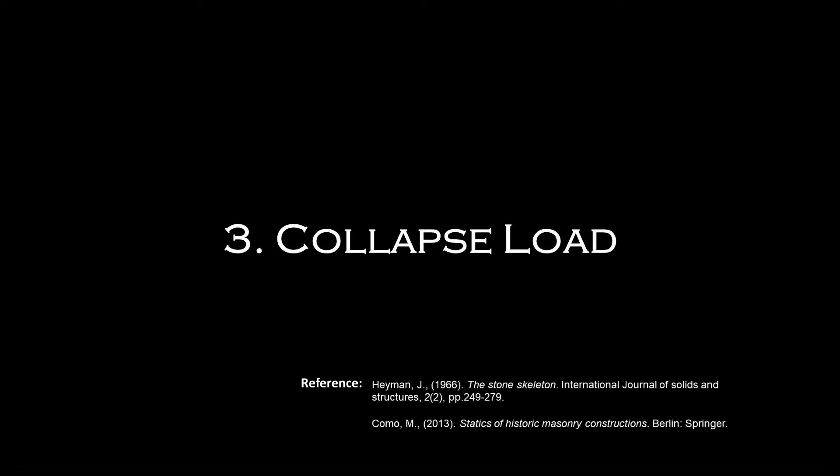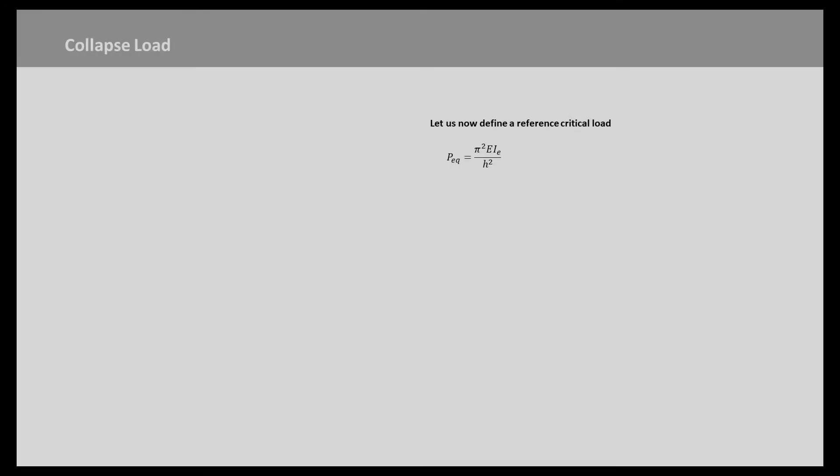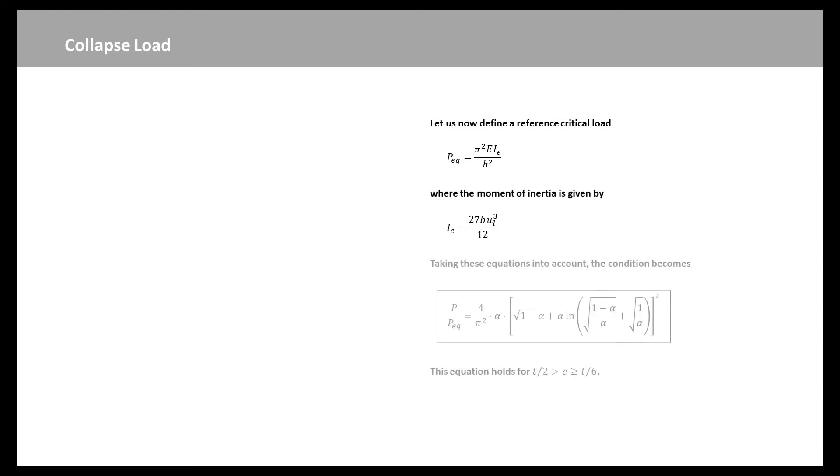Let us now define a reference critical load as shown here, which is evaluated by means of the moment of inertia IE of the resistance section of the pier head. This section has height 3UL. The moment of inertia IE is thus given by this expression. Taking these equations into account, we obtain this expression. This equation holds for half of T larger than E equal or larger than T over 6, where E is the load eccentricity at the end pier sections.